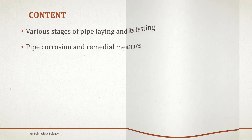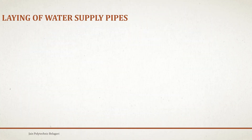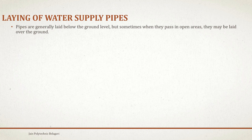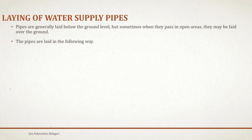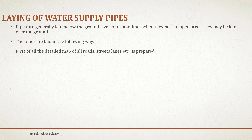The laying of water supply pipelines: pipes are generally laid below the ground level, but sometimes when they pass in open areas they may be laid over the ground. The pipes are laid in the following way.